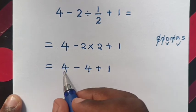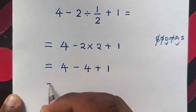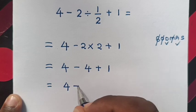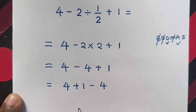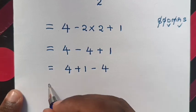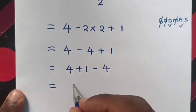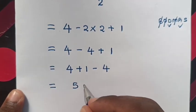So this will be 4 plus 1. So this will be equal to 4 plus 1, then minus 4. So this will be equal to 4 plus 1 is 5. 5 minus 4.